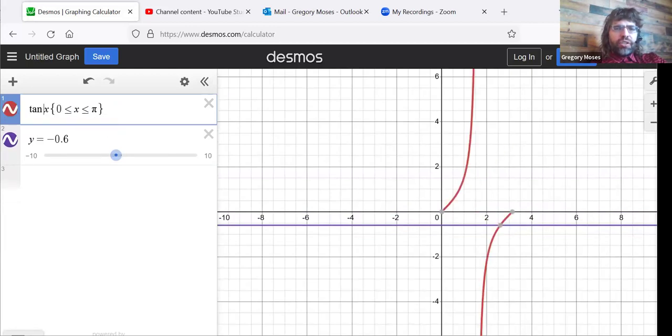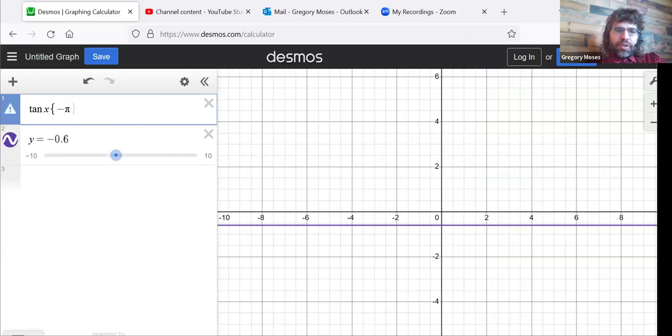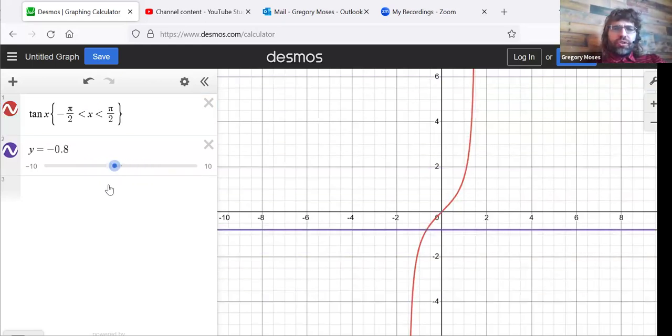For the tangent, we need a different restriction. This restriction from zero to pi does make the tangent one-to-one, but it's kind of an awkward choice because there's this vertical asymptote right in the middle of this interval. So the tangent restriction is very similar to the sine's restriction, actually. The only difference, and this is one-to-one, as you see.